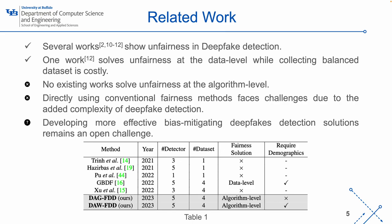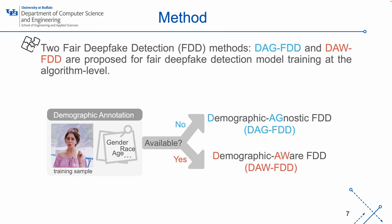Specifically, both the imbalance between real versus fake and the imbalance across demographic groups should be considered. Therefore, developing more effective bias-mitigating deepfake detection solutions remains an open challenge. We propose two fair deepfake detection methods, DAG-FDD and DAW-FDD, designed for training fair deepfake detection models with or without demographic information.